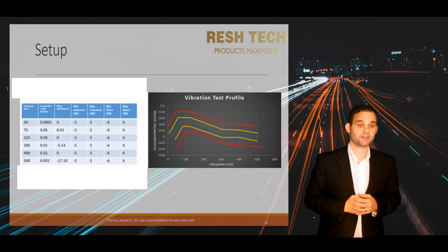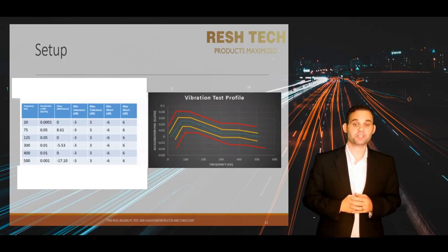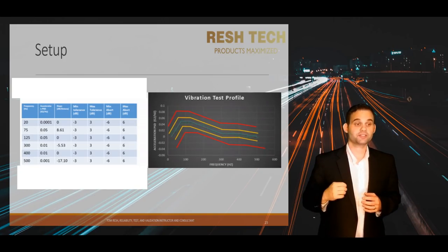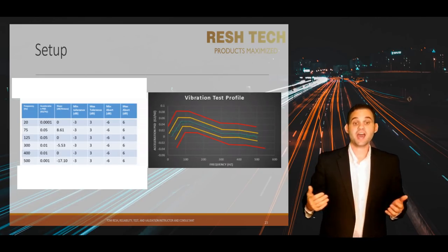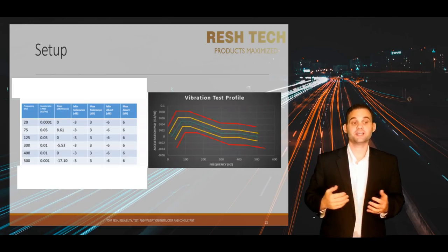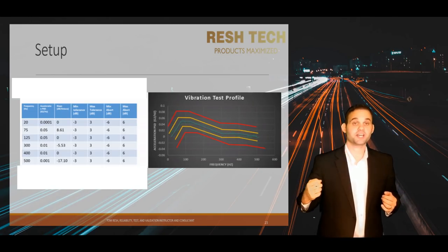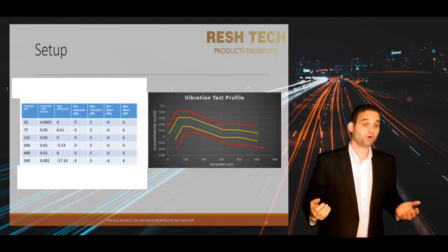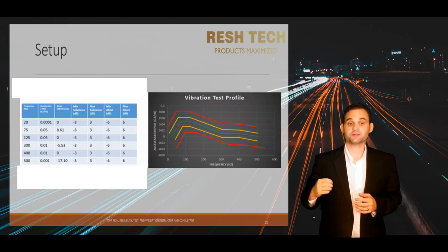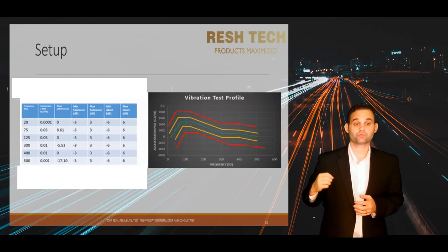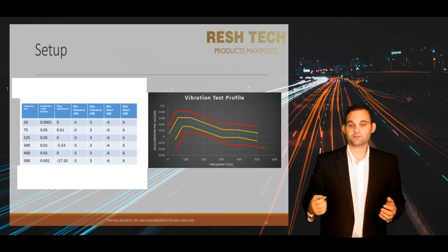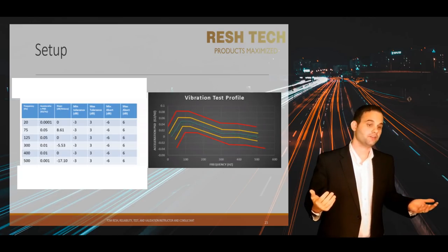The abort limits, on the other hand, are something everyone should care about. Typically these are set to -6 dB and +6 dB respectively, and you should leave these alone unless there is some very rare case requiring you to change them. The abort limits are there to protect your system or product if you have a setup issue that could cause acceleration levels to run much higher. So do not mess around with these values unless you need to and know what you're doing.